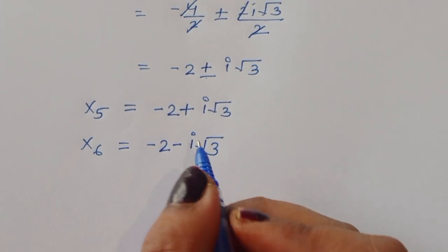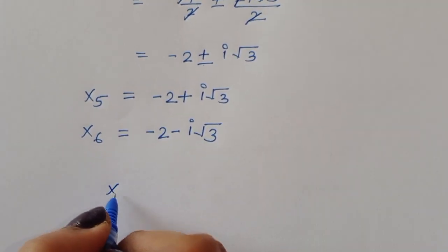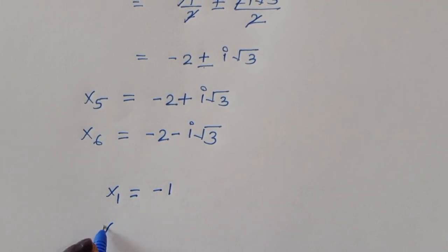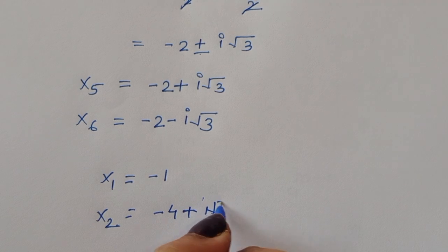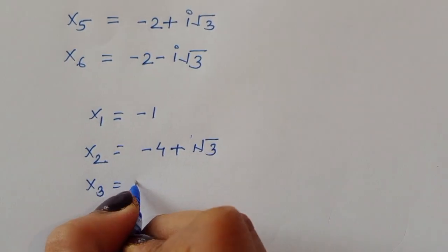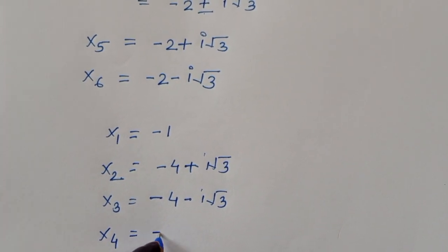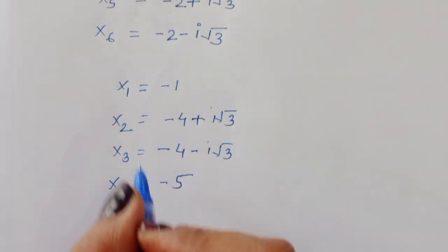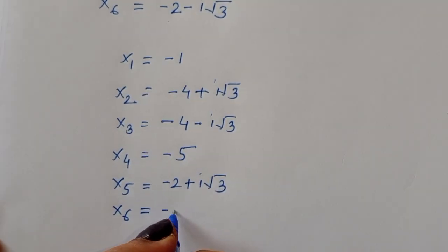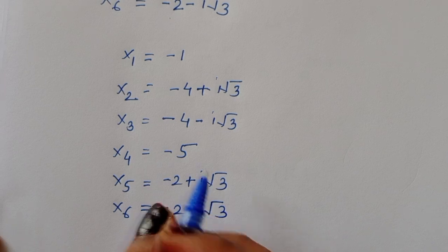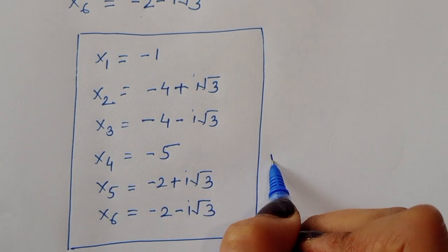In this way we got all six values of x: x1 = -1, x2 = -4 + i√3, x3 = -4 - i√3, x4 = -5, x5 = -2 + i√3, and x6 = -2 - i√3. This is the complete solution. Thank you.